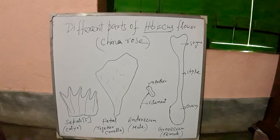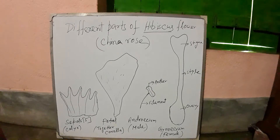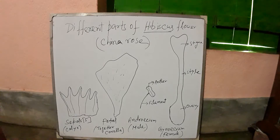Welcome to CBSC Science Experiments. Today we shall discuss the different parts of hibiscus flower — also known as China rose. The hibiscus flower is a complete flower and it has four main parts: sepal, petal, androecium, and gynoecium.